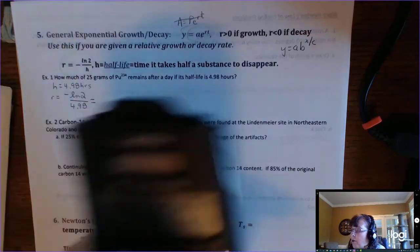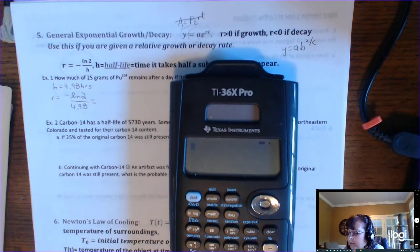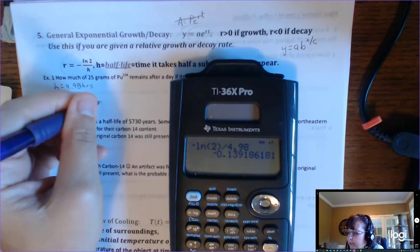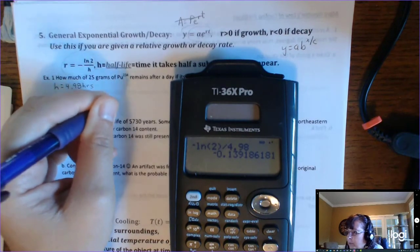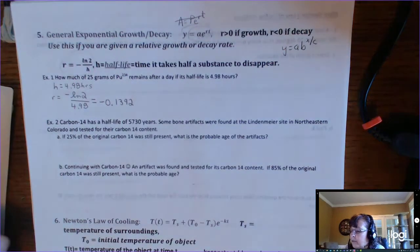So R equals negative natural log of 2 divided by H, so 4.98. So we'll go and find our R. We're going to have to round a little bit, but I might try to use the storing capabilities of the calculator. So I'll round that to four decimal places. Negative 0.1392, but I've got that stored in there. So now I know R.